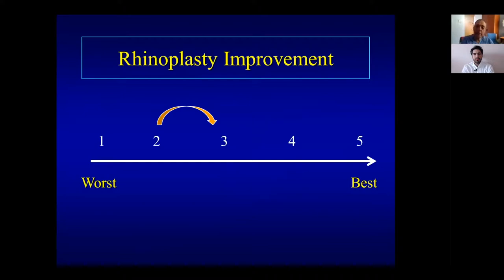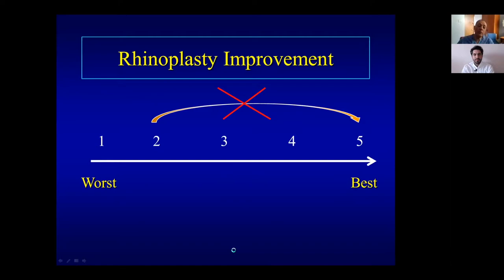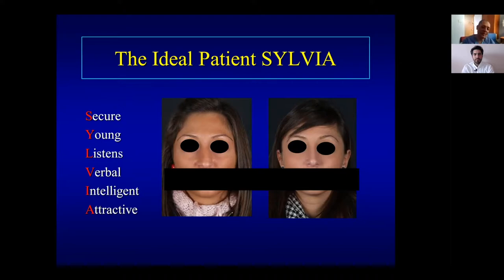I use a diagram in consultation: if you have five grades of rhinoplasty, when you change the nose you can jump one grade — like two to three — but you usually can't jump two grades, and it's impossible to create a completely new nose. The ideal patient has been called 'Sylvia' — typically a lady, secure, young, intelligent, attractive. She knows what she wants, understands the deformity, and has realistic expectations. When you achieve the result, she's happy.